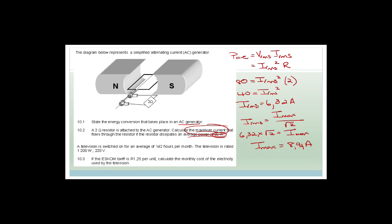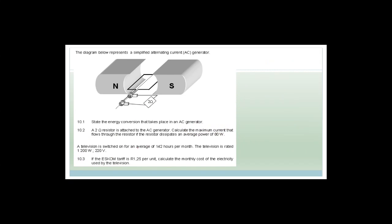On a totally separate note, a television is switched on for an average of 142 hours per month, rated at 1200 watts, 220 volts, and the Eskom tariff is 125 cents per unit. Calculate the monthly cost of electricity used by the television. Actually, this is not in your curriculum anymore — how cool is that?